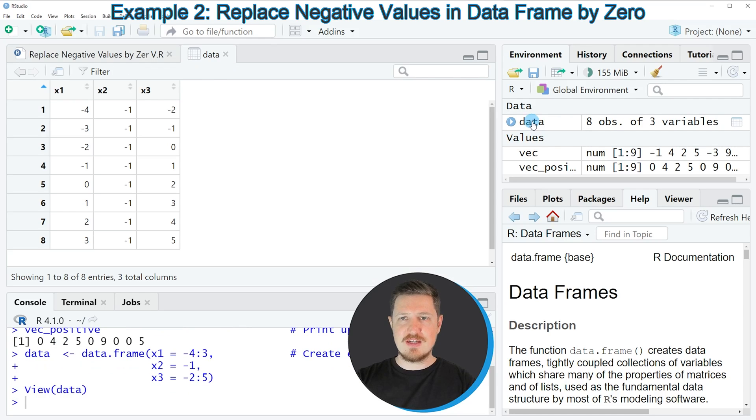If you click on this data set a new window is opened which is showing the structure of our data frame. As you can see our data contains 8 rows and 3 columns which are called x1, x2 and x3. All of these columns contain integer values. However some of the values are negative. Let's assume that we want to replace all negative values by zero.